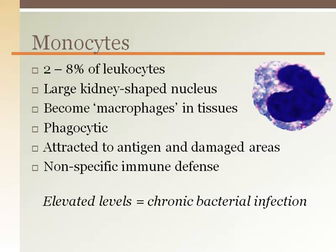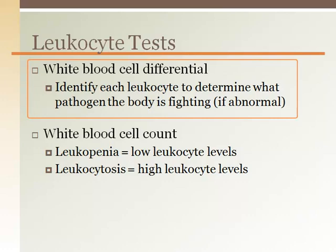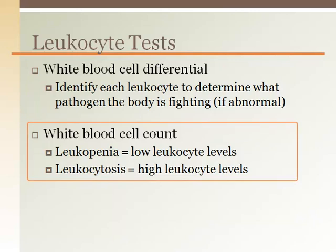The white blood cell differential is an evaluation of the number and types of white blood cells, or leukocytes, in a blood sample. It is an important test to ensure each of the five leukocytes are found in appropriate ranges. If there is a higher number of a particular leukocyte, that could mean the person suffers from a particular medical concern and is cause for further testing. The white blood cell count is an absolute count of white blood cells in circulation, without regard for their specific type.